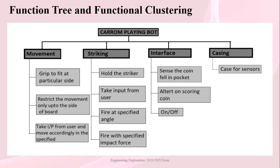In the striking unit, we need to hold the striker and take input from the user. With the specified impact force, the device is able to strike the Karam striker at a specified angle — firing at the specified angle and with the specified impact force. In the interface part, the device senses the coin when it falls into the pocket and alerts the user on scoring every single point. Lastly, the casing part provides a case for the sensors.